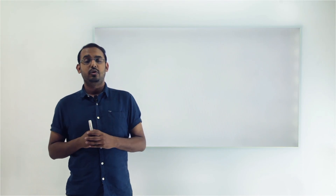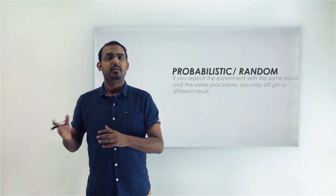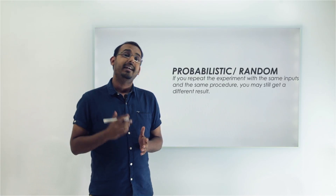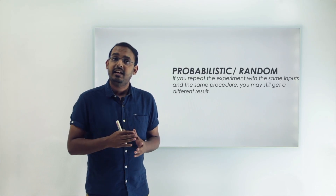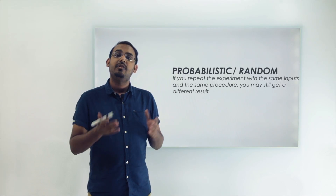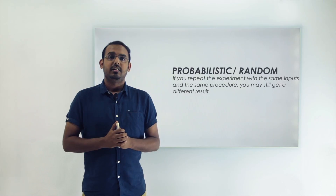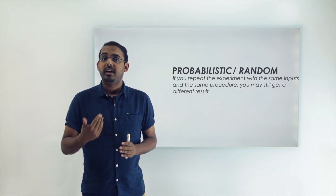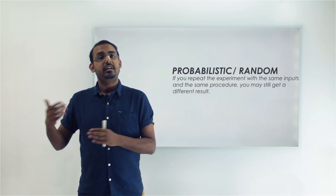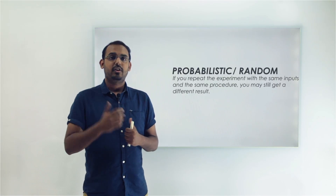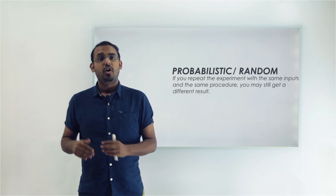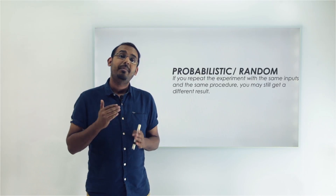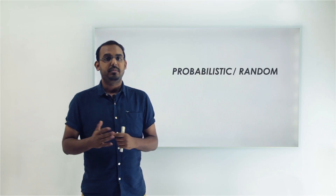In a random or probabilistic experiment, if we repeat the experiment with the same steps and inputs, we might still end up with a different result. For example, rolling a dice — no matter how many times I roll it, I might get the same or a different result. Similarly, tossing a coin in the exact same manner might still yield a different outcome. These are what we call random experiments.